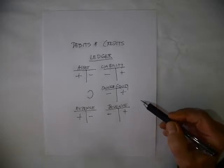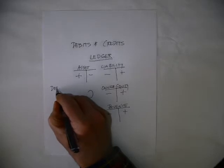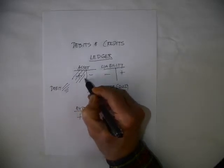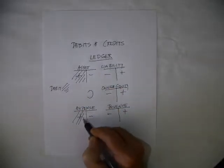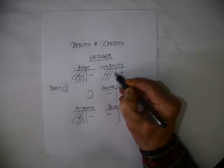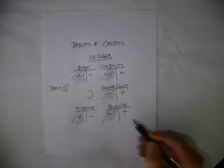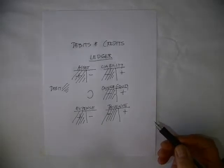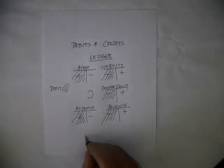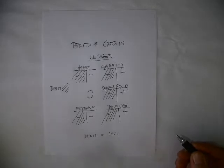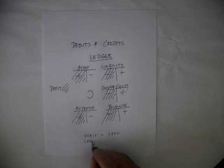Now I'm going to show you what a debit is, and I'm going to use a hash mark. So this is a debit. As you can see, I've hash-marked the left side of the account. Debit is equal to left — regardless of the account, the left side is the debit side. So obviously, the credit side is equal to the right. That's it.